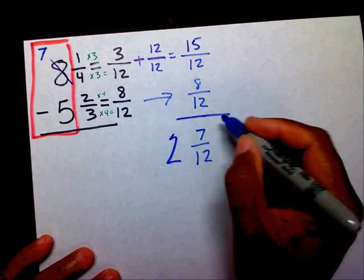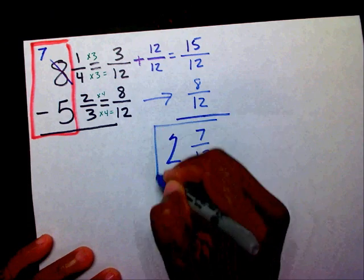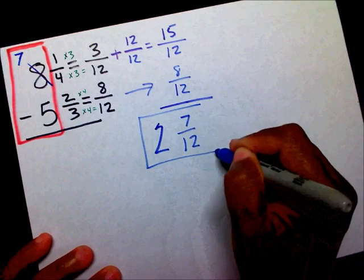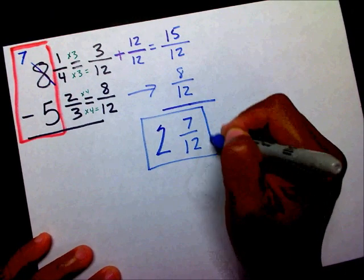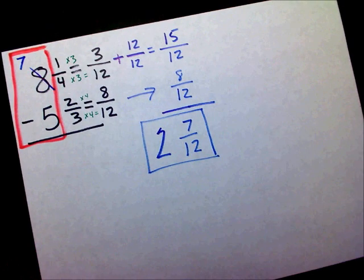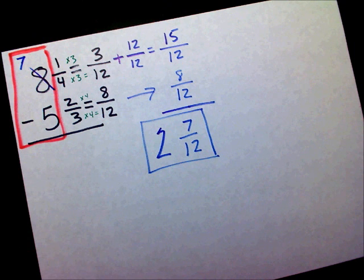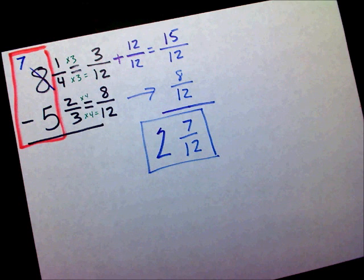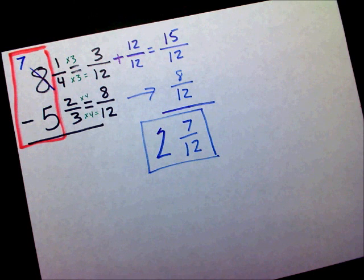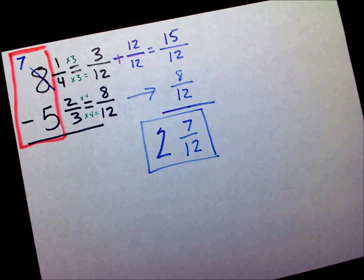This is not your final answer yet — don't forget about your whole numbers. It's no longer eight minus five; it's seven minus five because we had to borrow one. So seven minus five is two, and the final answer is two and seven-twelfths. Please visit mathwithmoon.org for any future videos you may need. I hope this video helped you, and I will see you next time!